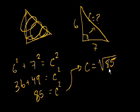And if we actually wanted to estimate what that is, well, let's think about it. The square root of 81 is 9. And the square root of 100 is 10. So it's someplace in between 9 and 10. And it's probably a little bit closer to 9. So it's 9 point something, something, something. And that's a good reality check. That makes sense. If this side is 6, this side is 7, 9 point something, something, something makes sense for that length.